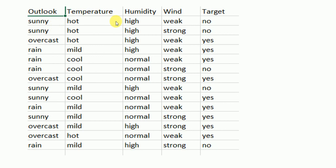The input consists of 14 example entries, with the final column being the target. The attributes are outlook, temperature, humidity, and wind. Each attribute has different example values such as sunny, hot, high, and weak. The target concept has 14 values total — 9 yes and 5 no values among the examples being considered.